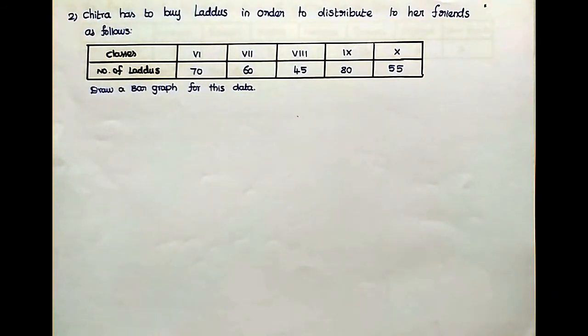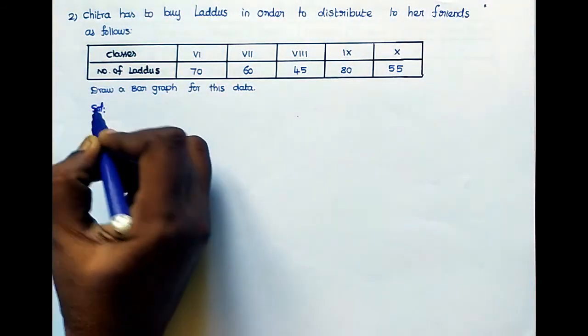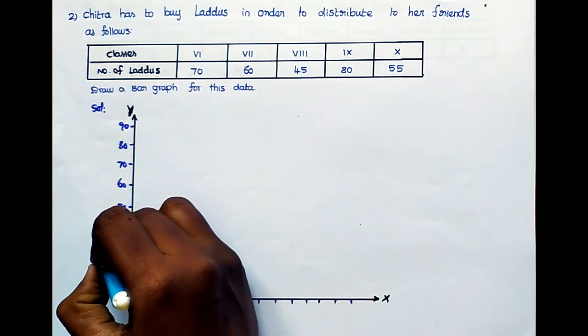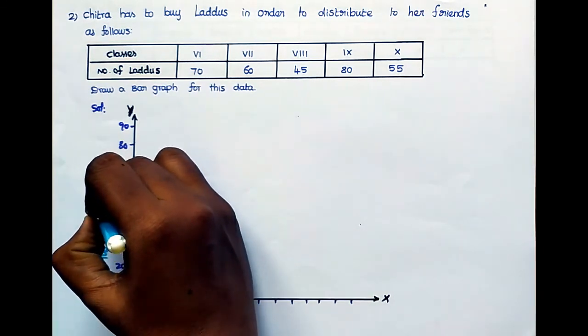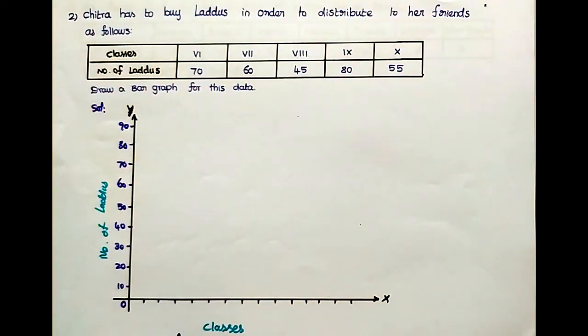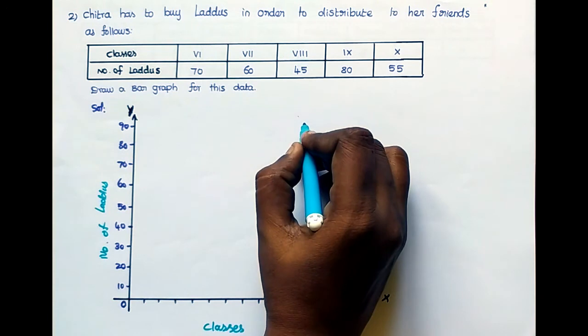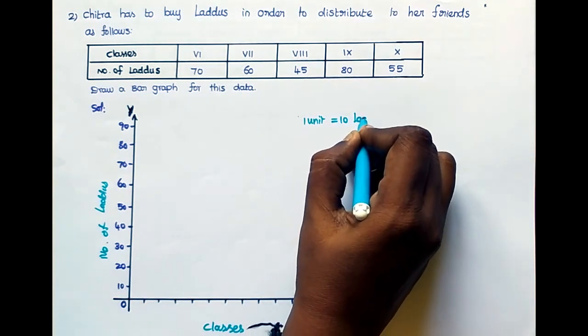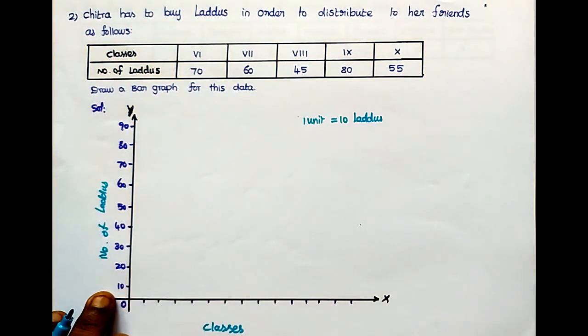First draw the bar graph. Here the bar graph, and this one is classes and this is number of laddus. Now listen, first scale units. One unit equal to 10 laddus. 0, 10, 20, so difference is 10. So 10 laddus.